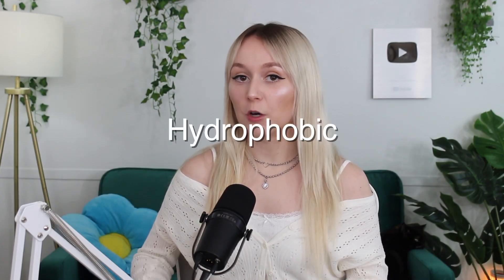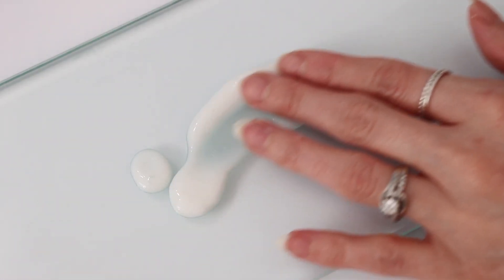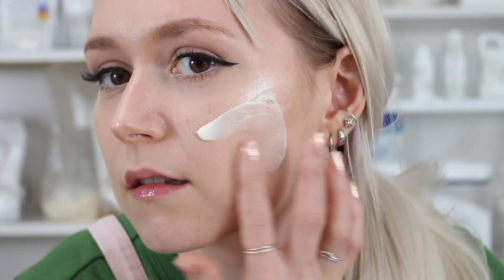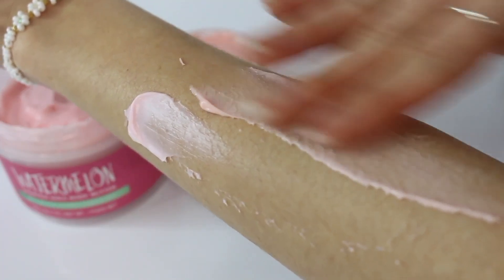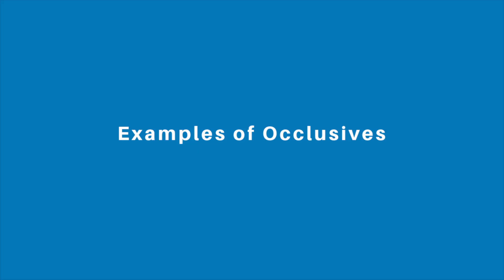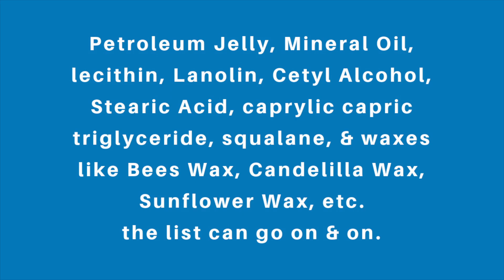Occlusives. Occlusives create a hydrophobic barrier — literally meaning water-hating — over the skin to help prevent transepidermal water loss. Occlusives often get a bad reputation because they create this layer over the skin, and some may say it clogs pores and causes acne, but it's actually quite the opposite. Occlusives help protect the skin by keeping out external stressors and locking in moisture and hydration. An example is petroleum jelly — you may have heard of slugging, where people put a layer of petroleum jelly over their skin at night because it's an occlusive that prevents transepidermal water loss.